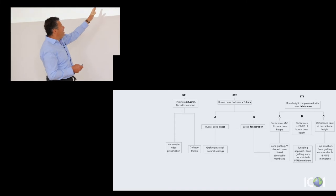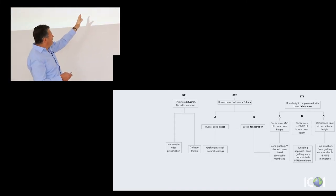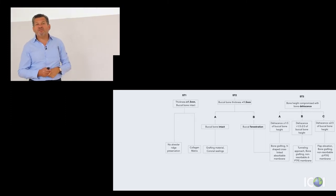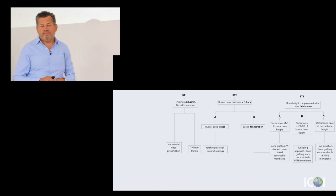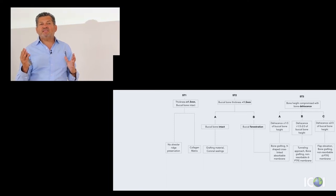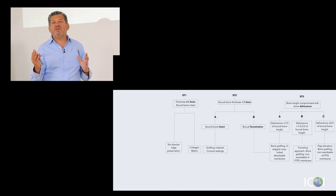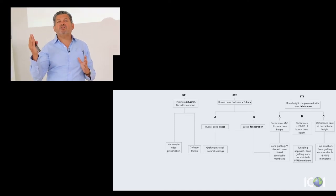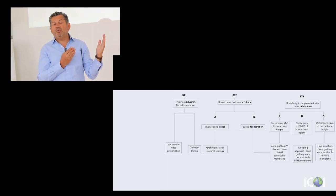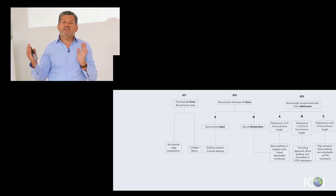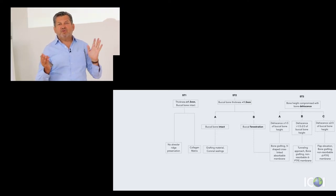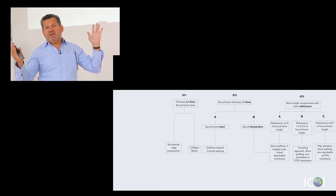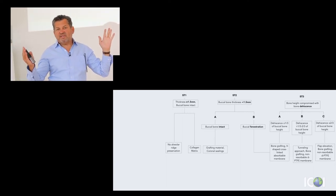When we go to ST3B with more than one-third of the buccal plate missing up to two-thirds, we use a non-resorbable PTFE membrane. Because we have access to place this membrane, we will tunnel — without flap elevation — between the soft tissue and the existing buccal plate with the dehiscence. The same is done palatally: we tunnel slightly and try after placing the bone grafting material in the socket to insert this non-resorbable membrane inside using a tunneling technique.